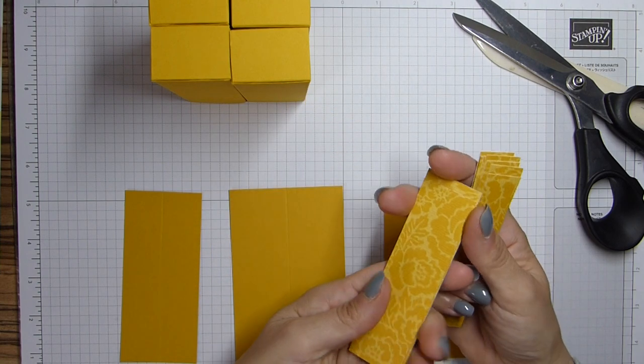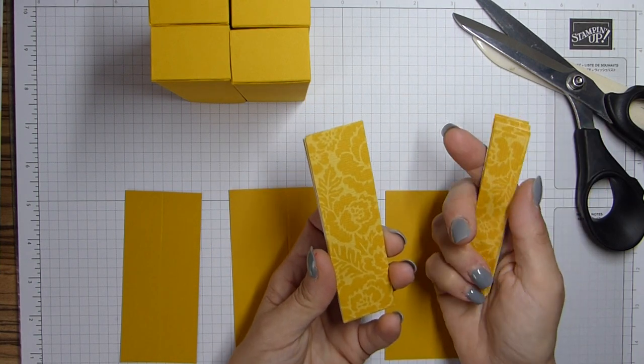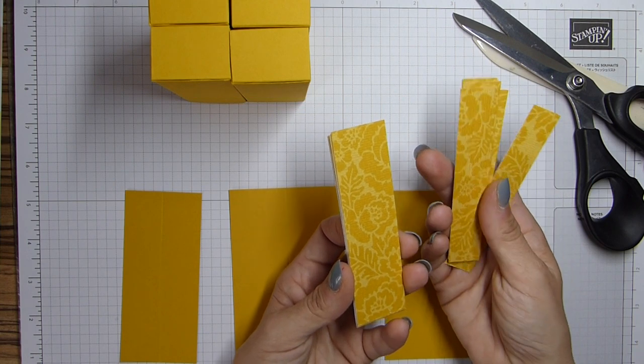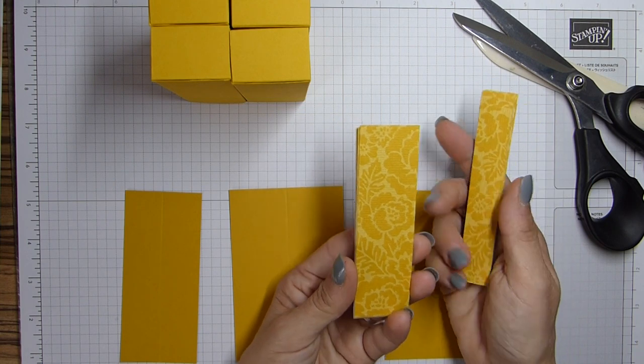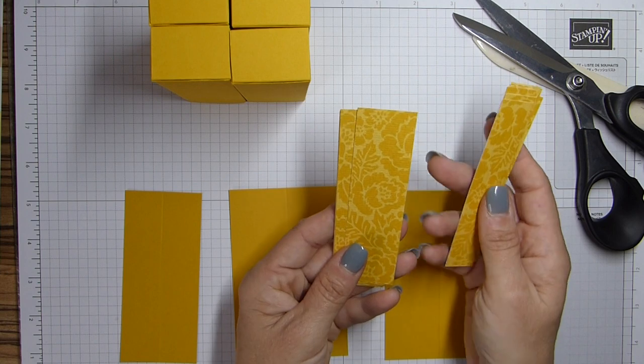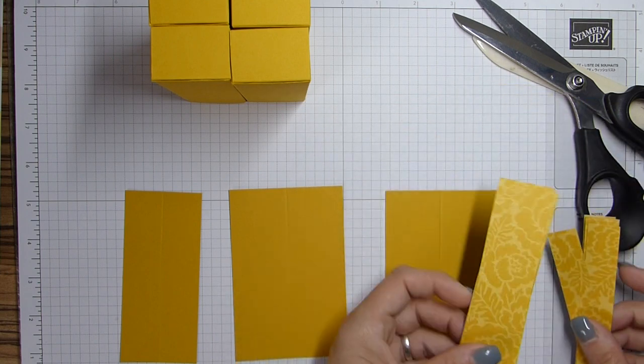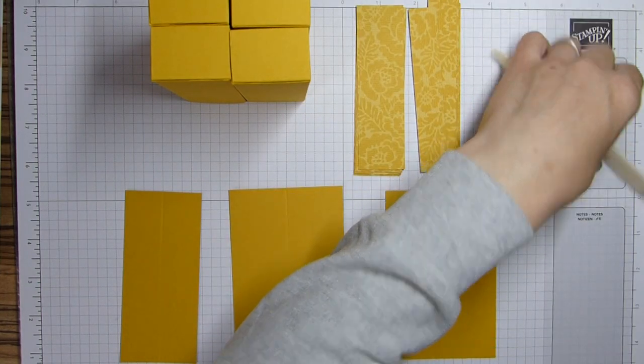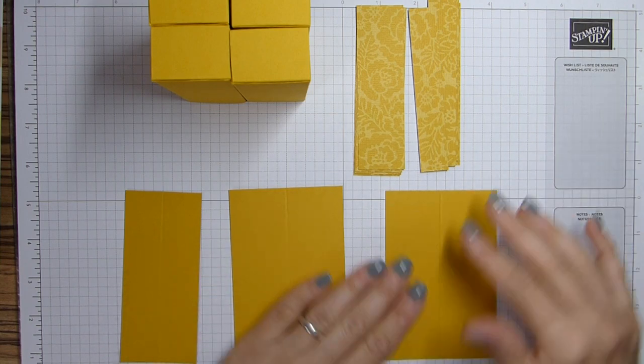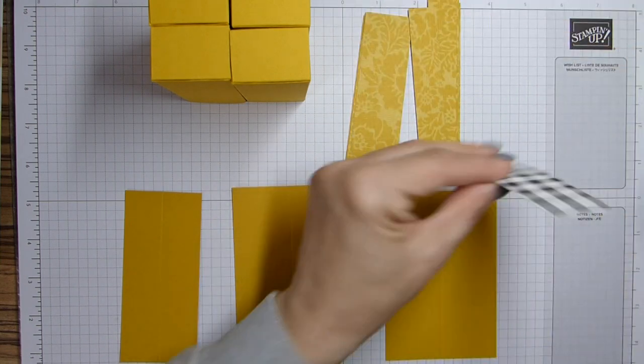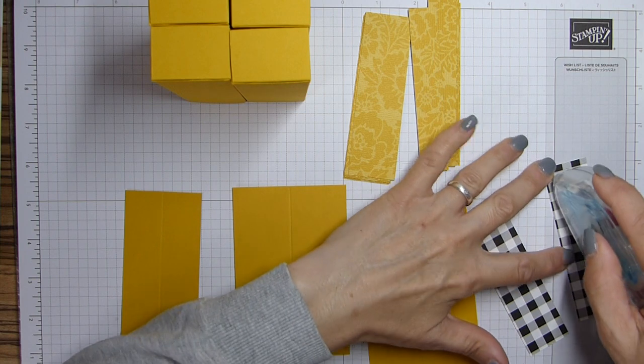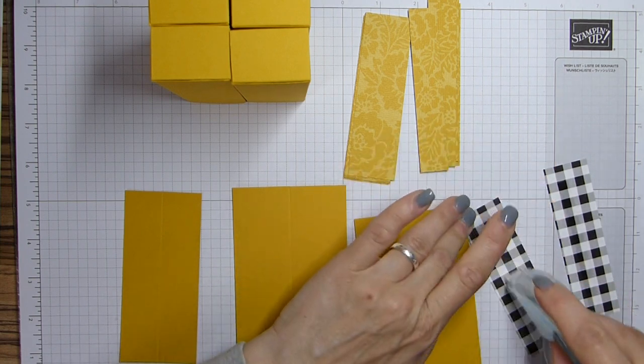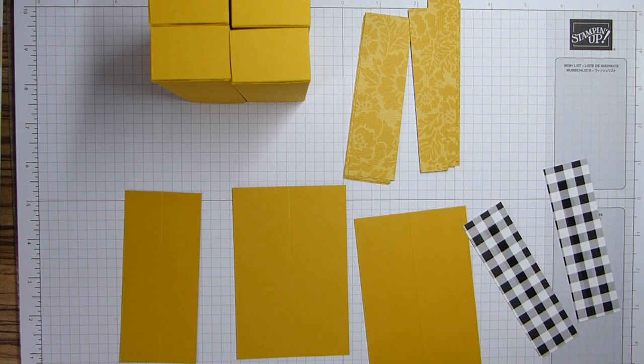So you're going to need a fair bit of DSP going on here. So you will need eight of each: three quarters by four and a quarter and one and a quarter by four and a quarter, three and a half by eleven and two by eleven. Obviously the wider ones are going on the wider piece here.